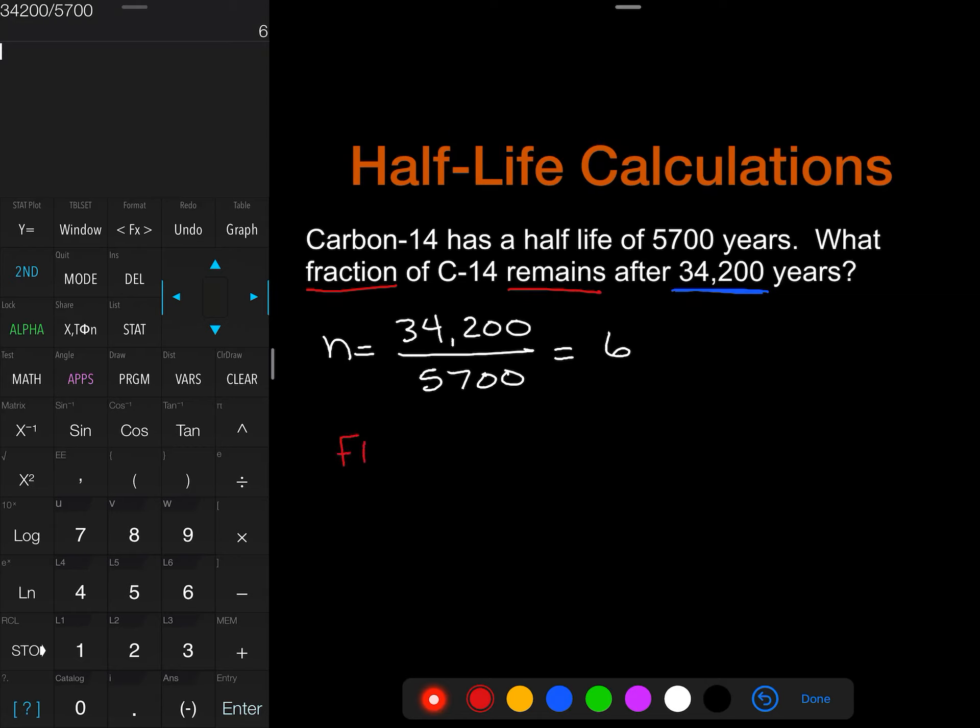Now, to determine the fraction remaining we do 1 over 2 to the nth power. So 1 over 2 and n was 6 so to the 6th power.